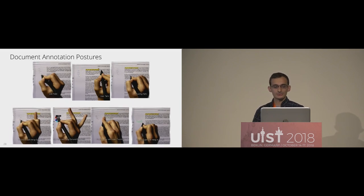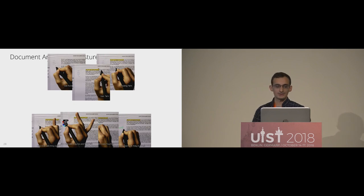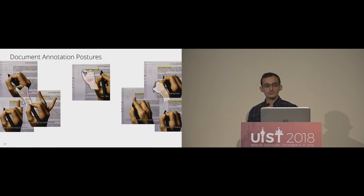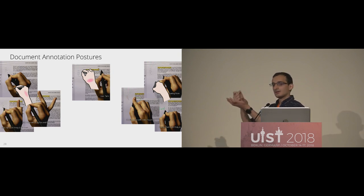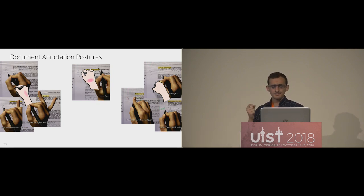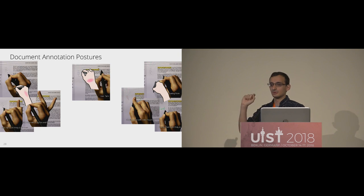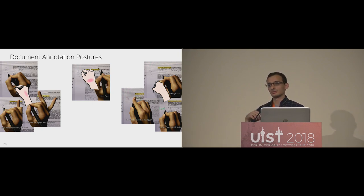One obvious way to group these is simpler postures with more common actions. But another way we tried to group them was to have a semantic relationship. All the side palm-based postures — since that's how most people usually hold their writing hand — are associated with creating: the pen tool, erasing, or changing the color. Heel palm, being very quick to switch to, is associated with a shortcut tool like the highlighter. And floating palm, being coarser, is associated with larger actions like interacting with a document as a whole.